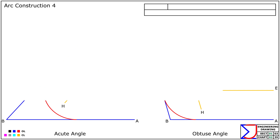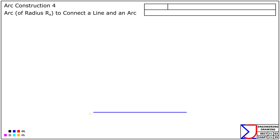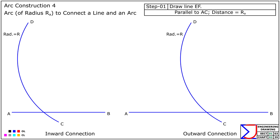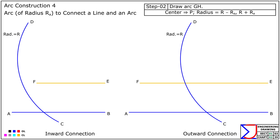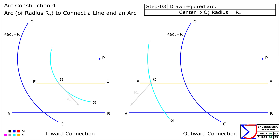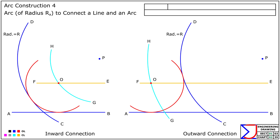Arc Construction 4: In this example we will connect a straight line AB and a given arc CD with another arc of radius RA. There are two possibilities to consider: inward connection and outward connection. In both cases, begin by drawing a line parallel to AB at a distance equal to RA from it. Then, using the center of arc CD — call it point P — draw an arc with a radius adjusted to R minus RA for an inward connection, or R plus RA for an outward connection. The intersection of the parallel line and the new arc gives the center of the desired arc, point O. With O as the center and radius RA, draw the required connecting arc. This provides a precise connecting arc, either inward or outward, between the straight line and the given arc.